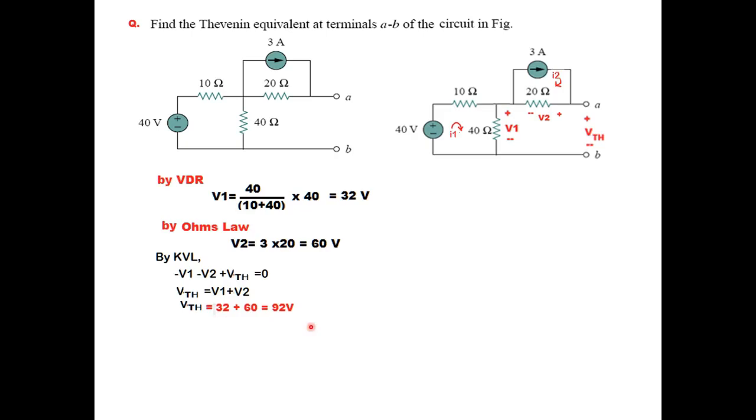From here you can find VTH to be 92 volts. Now we need to find RTH. Again, we set the sources to zero, so the current source has been opened and the voltage source has been shorted.